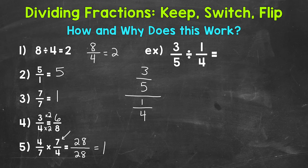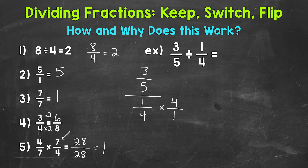A complex fraction is a fraction where the numerator, denominator, or both are a fraction. Once we have our complex fraction, we want to get our denominator to equal 1, because anything over 1 equals itself, making this much more manageable. We do that by multiplying the denominator by its reciprocal. So we multiply 1 fourth by 4 over 1 to get that denominator to equal 1. Since we must do the same to the top, we multiply our numerator by 4 over 1 as well, keeping everything equivalent.